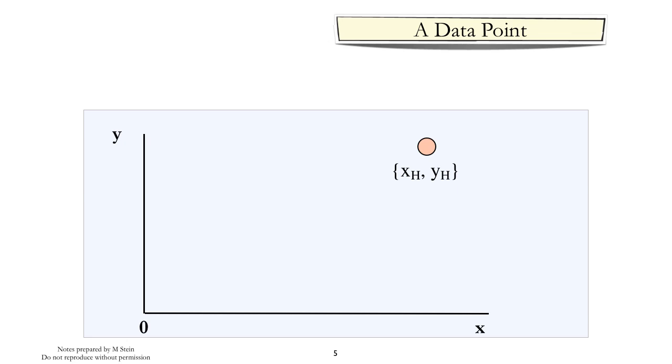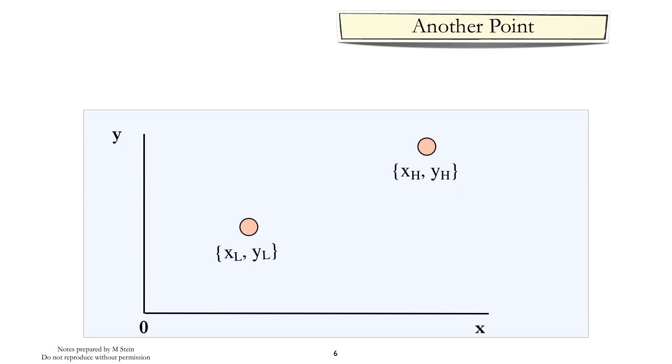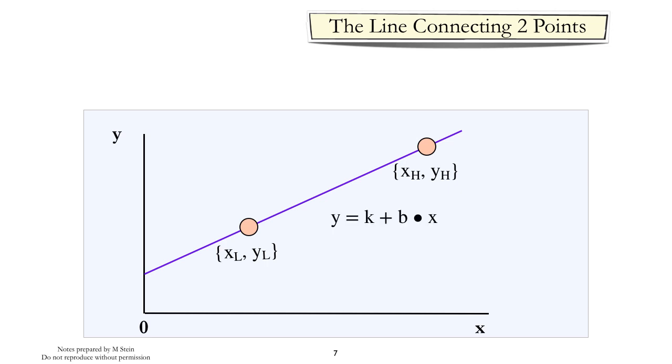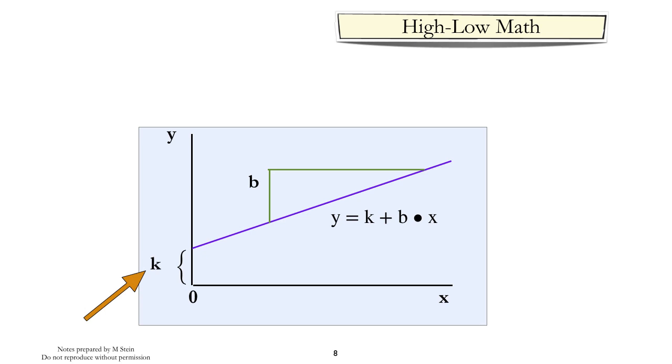We will start with a review of the high-low approximation method for determining the equation of a line. Initially, we have a data point, and we'll call this the high point. We'll add a second point, and we'll call this the low point. Then we'll draw a line connecting the two points. Each point satisfies the relationship defined by the line for some value of k and b. The question is, can we determine the values of k and b? To make this easier to follow, let's suppose the high point has the value 200 and 1400, meaning the x value is 200 and the y value is 1400. X-low equals 100, y-low equals 900. The line we're interested in will have an intercept equal to k, and the slope of the line will be equal to b.